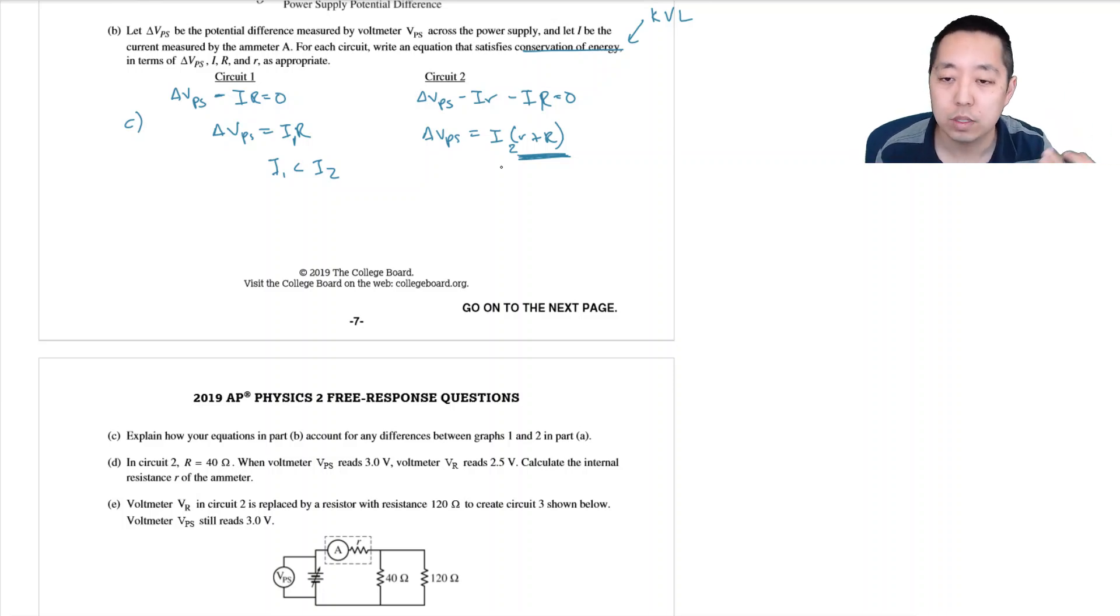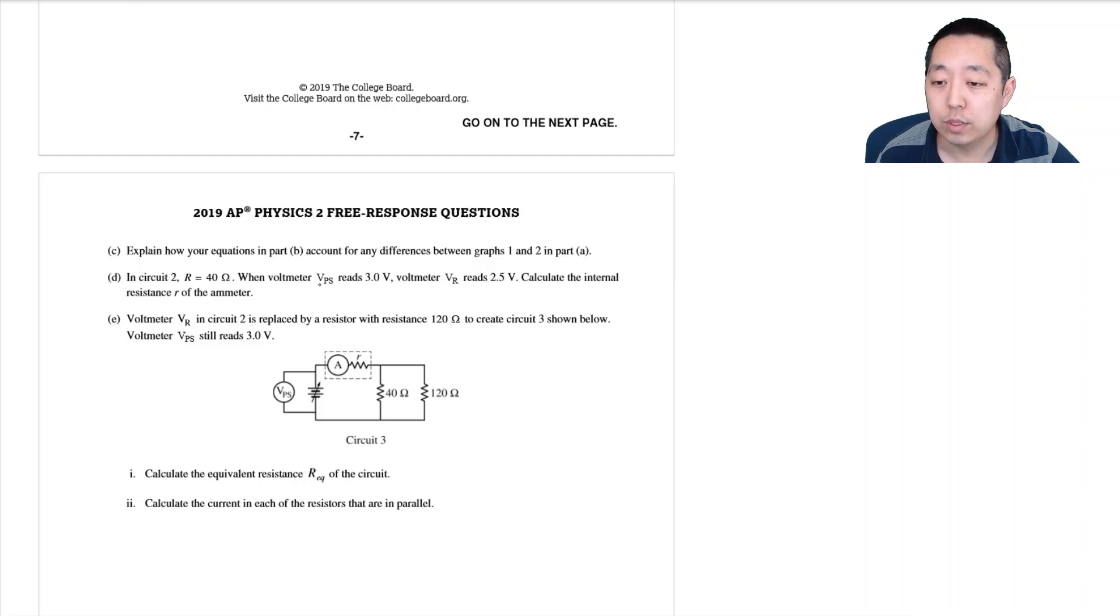So in circuit 2, r equals 40 ohms. When the voltmeter VPS reads 3 volts, voltmeter VR reads 2.5 volts. Calculate the internal resistance r of the ammeter. So let me draw a picture here of what we're having. We have a voltage source and this has 3 volts. There's a little resistor little r, there's a big resistor here of 40 ohms, and the voltage across here is equal to 2.5 volts.